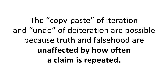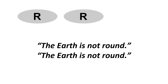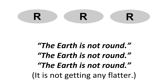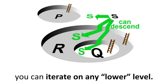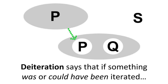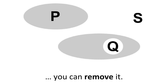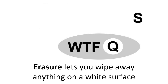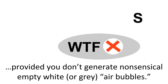The copy-paste of iteration and undo of de-iteration are possible because truth and falsehood are unaffected by how often the claim is repeated — 'the earth is not round' is not getting any flatter no matter how many times you say it. In addition to iteration on the same level, you can iterate on any lower level. However, you must ensure that your copy-paste never has to climb any level. De-iteration says that if something was or could have been iterated, you can remove it. Insertion lets you write whatever you want in already cut spaces. Erasure lets you wipe away anything on a white surface, provided you don't generate nonsensical empty white or gray air bubbles.